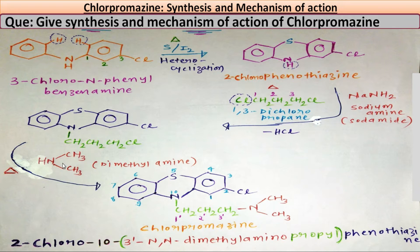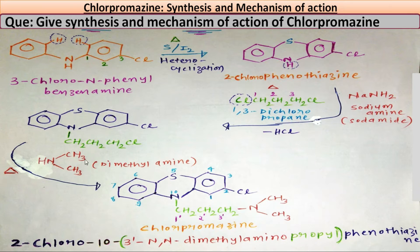Dimethylamine is added to the intermediate. On heating, hydrogen and chloro are removed as hydrogen chloride, and the dimethylamino group is substituted at the chloro position. So nitrogen now attaches at that carbon, giving N(CH₃)₂. The formed compound is CH₂CH₂CH₂ connected to nitrogen with two methyl groups. This compound formed is known as chlorpromazine.